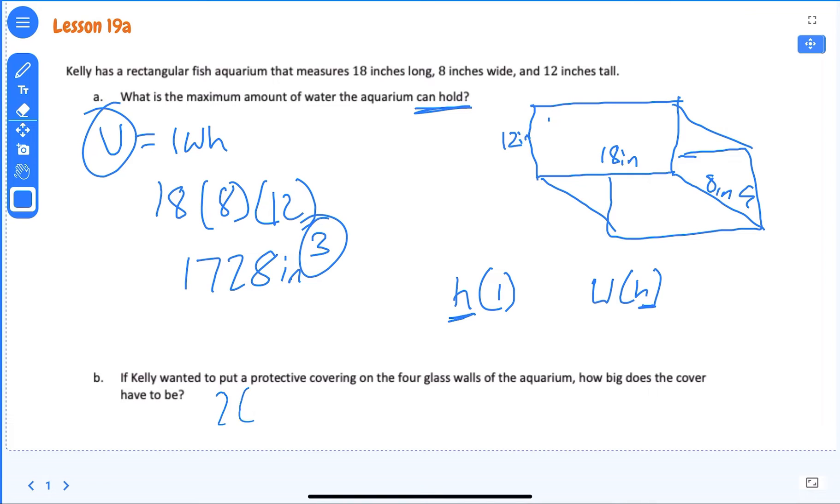So we would have 2 times the height times the length, and then plus 2 times the width times the height. Okay, and that would equal what? 2 times the height is 12